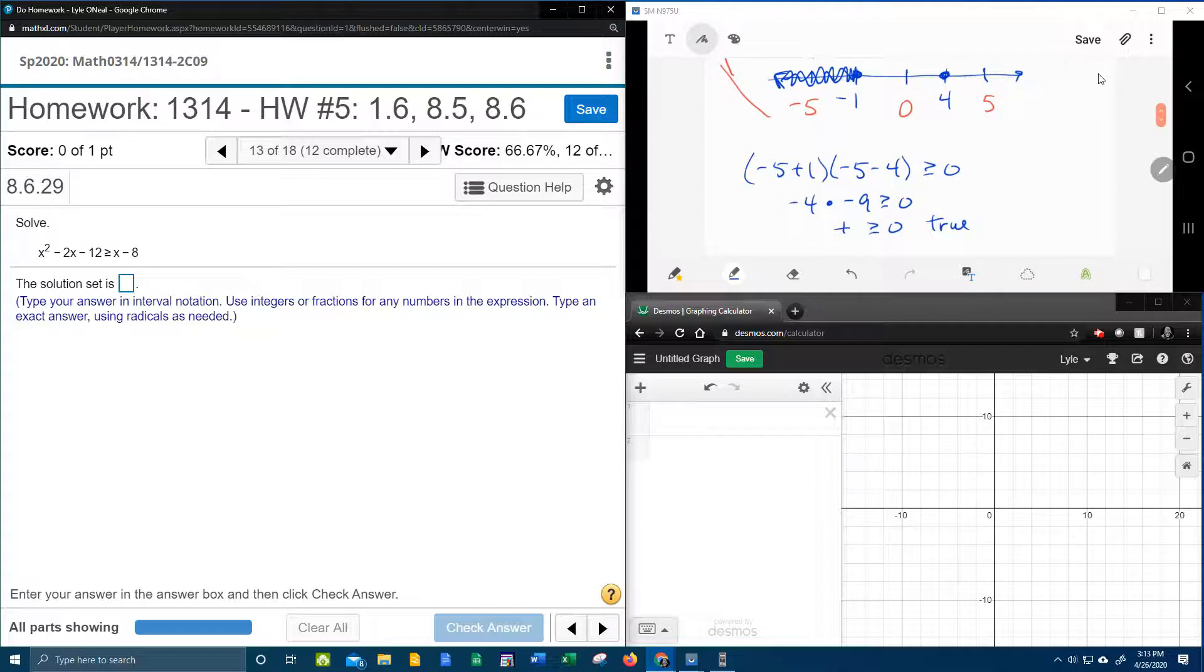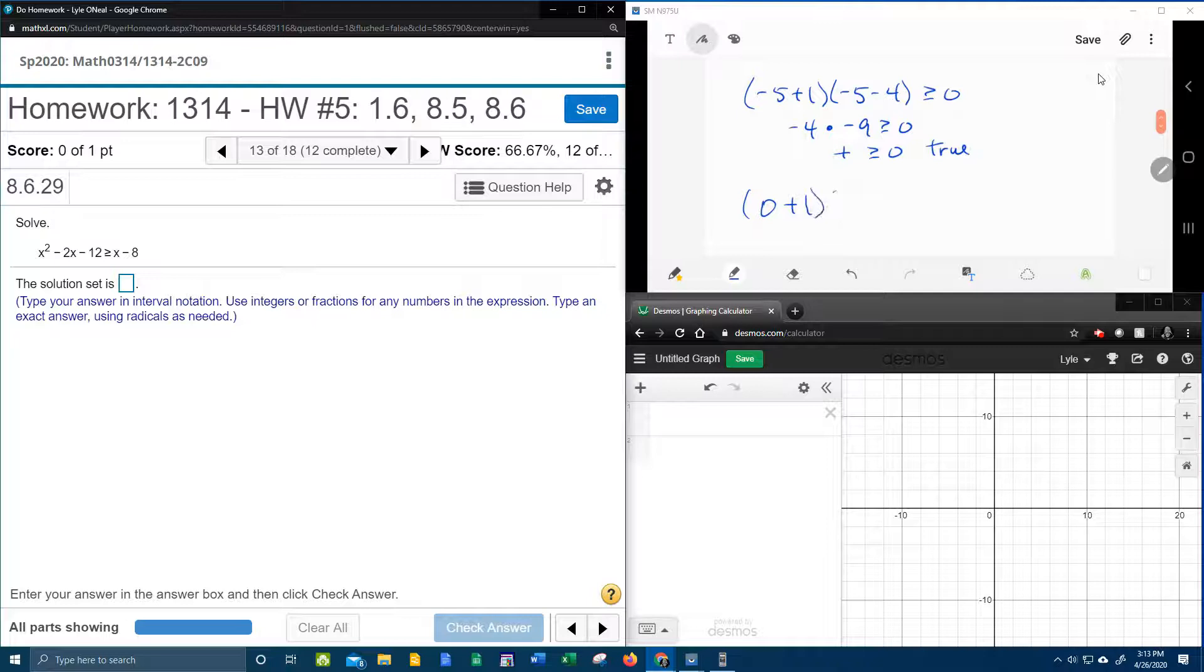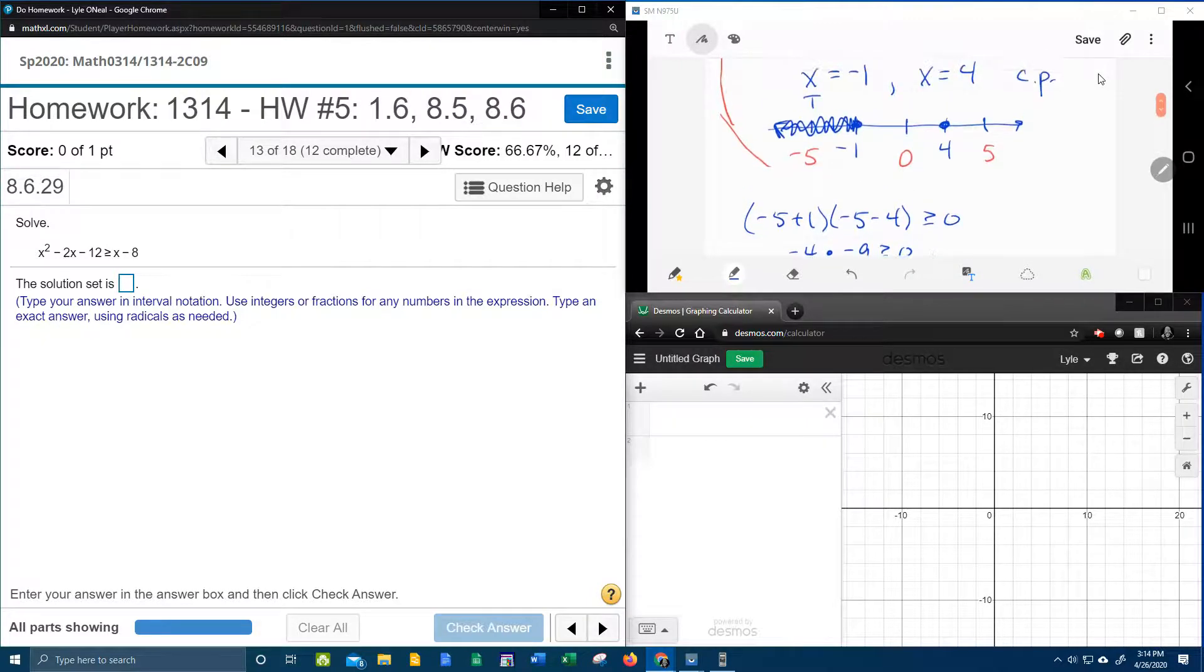Now let's check 0. So 0 plus 1 times 0 minus 4. Is that greater than or equal to 0? Well, that's going to be 1 times negative 4, which is going to be a negative number. And is a negative number greater than or equal to 0? That's false. Negative numbers are not greater than or equal to 0. So the 0 gives me a false. And that means that nothing, no number between negative 1 and 4 is going to be a solution.